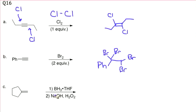Okay, part C is this BH3·THF followed by sodium hydroxide hydrogen peroxide. And when you see this you should automatically think of the hydroboration because that's what these conditions are for.